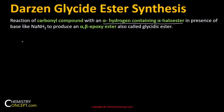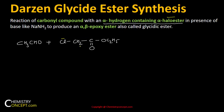A carbonyl compound like CH3CHO reacts with an alpha halogen-containing alpha halo ester, such as Cl-CH2-C(=O)-O-C2H5. It is an ester that has a halogen atom attached to the alpha carbon and it also has an alpha hydrogen.